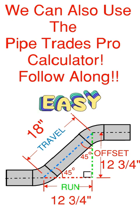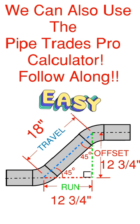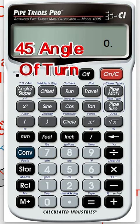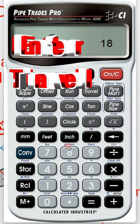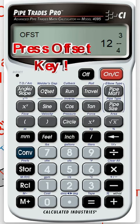We can also use the Pipe Trades Pro calculator. So follow along in the example. First of all you're going to have to tell it that you're dealing with a 45 degree set - 45 angle slope. Tell it you have 18 inches for your travel, and then ask it what the offset is. And you're going to get 12 and 3 quarters.